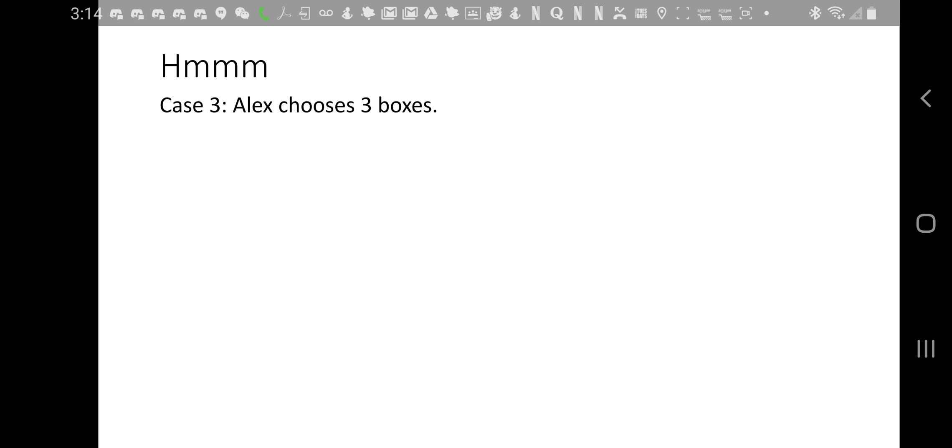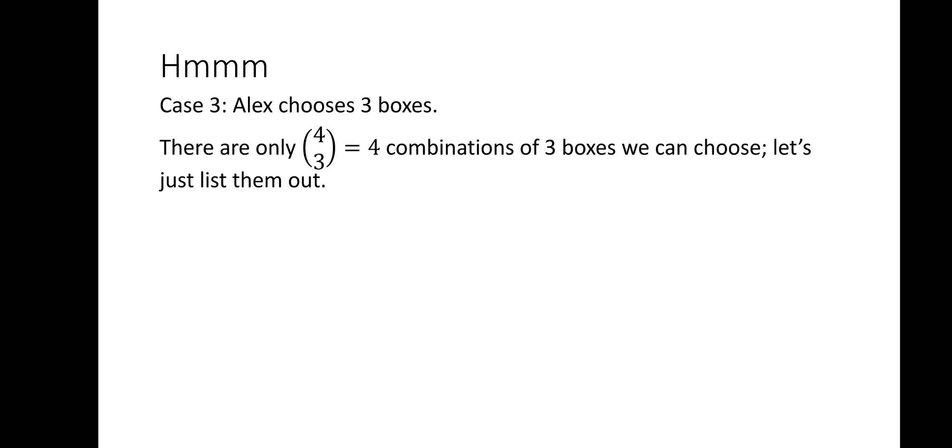Case 3, Alex chooses 3 of the boxes. There are only 4 choose 3 or 4 combinations of 3 boxes he can choose, so let's just list them out. We have 5 plus 8 plus 12 which is 25, that's not a multiple of 3. 5 plus 8 plus 13 is 26, which also isn't a multiple of 3. And 5 plus 12 plus 13 is 30, which is a multiple of 3.